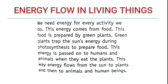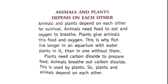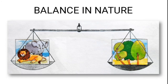This energy is passed on to humans and animals when they eat the plants. This way, energy flows from the sun to plants and then to animals and human beings. Animals need food to eat and oxygen to breathe — plants provide both. That is why fish live longer in an aquarium if there are water plants in it, because they get oxygen from the plants. Plants in turn need the carbon dioxide that animals breathe out.